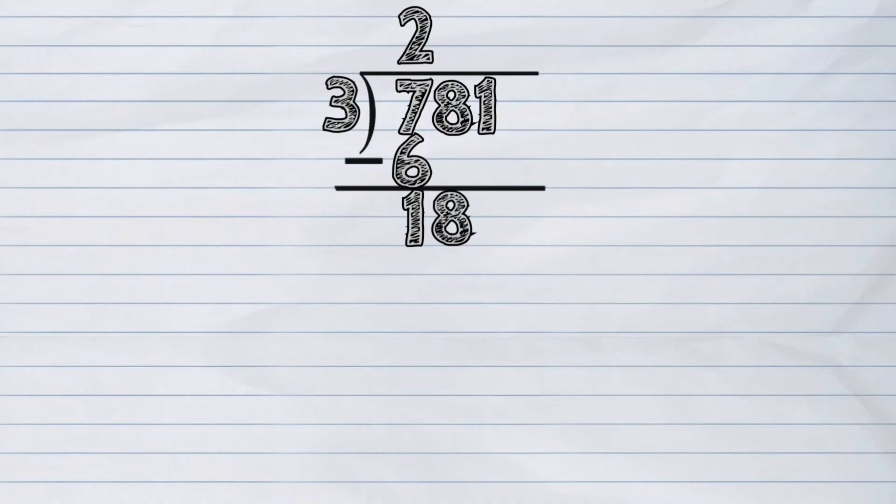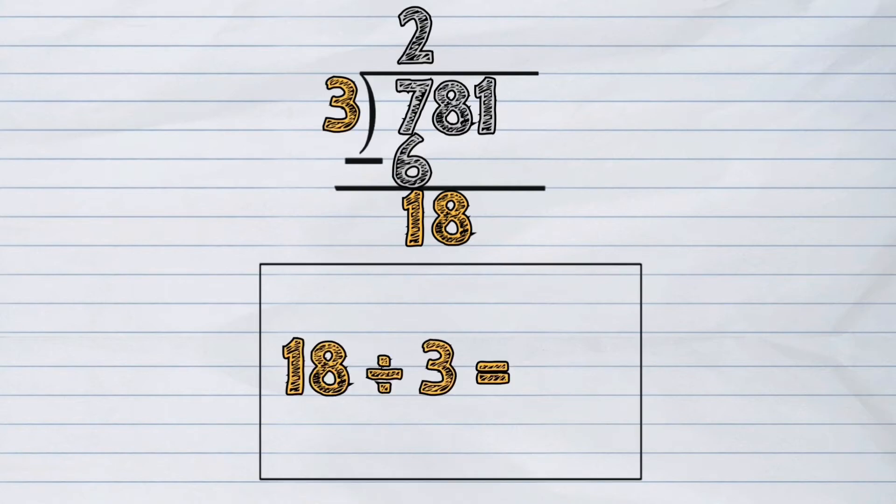Now, we will do again the process of step 1. Divide. We will divide 18 tens by 3. How many times can you divide 3 into 18? The answer is 6. We write the answer next to digit 2.